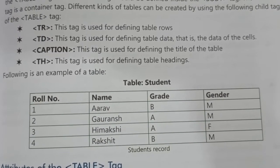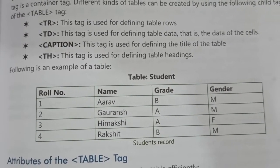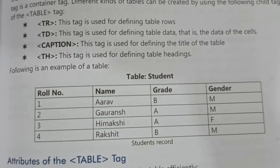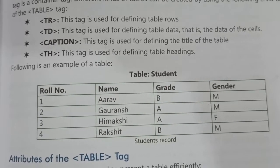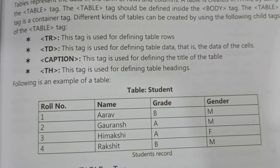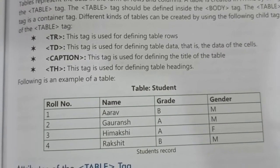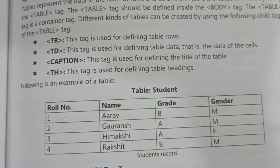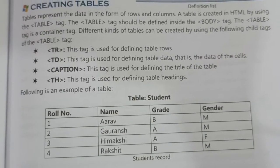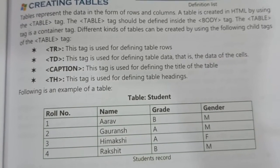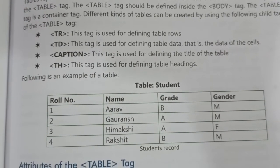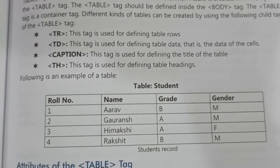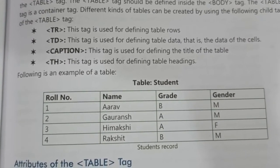The data shown in the table — role number, name, grade, gender, and all other cell content — is written using the TD tag. The next one is Caption. Caption means title, but here it refers to the title of the table, not the HTML page title. For example, 'Student' is the title of the table, and it is defined using the Caption tag.